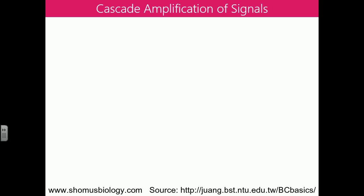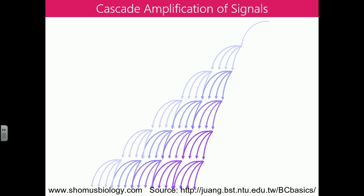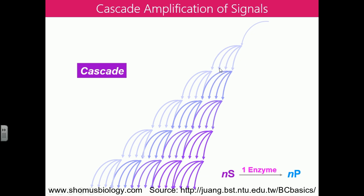Enzyme regulation functions as an amplified cascade. Starting from one enzyme, it can affect multiple substrates, which are further converted into multiple products — creating a chain reaction. The signal is amplified several fold: one substrate is converted into multiple products, and each product can act as a substrate for another enzyme, converting further into more products. This is why it is described as an amplification process.